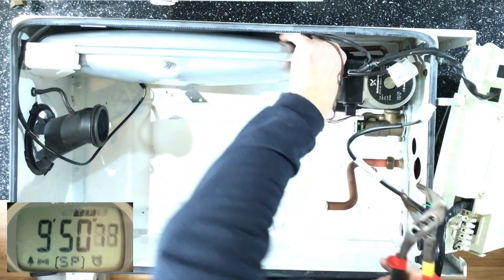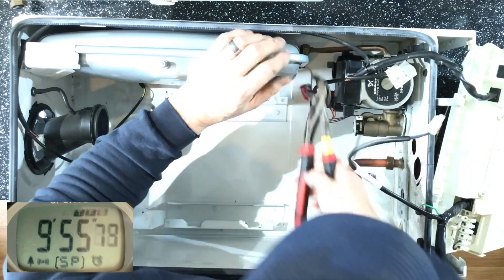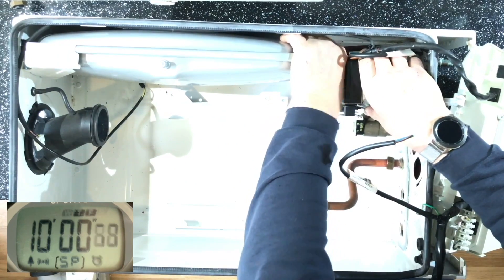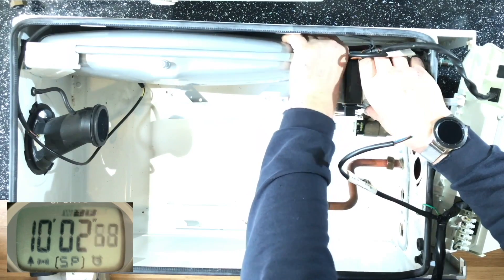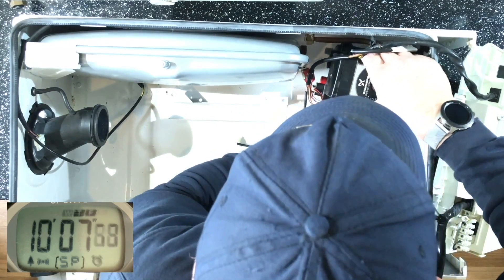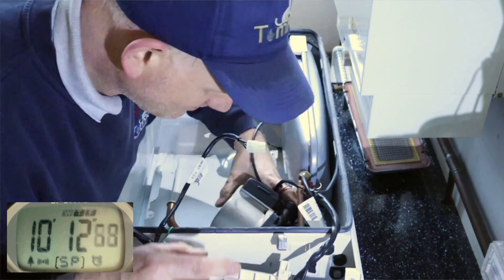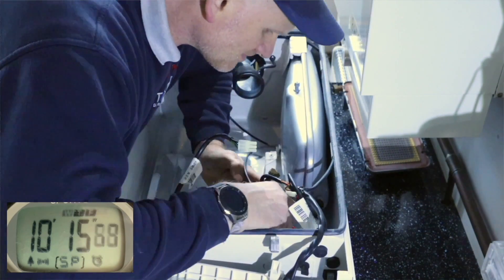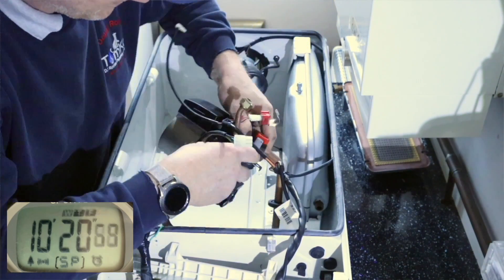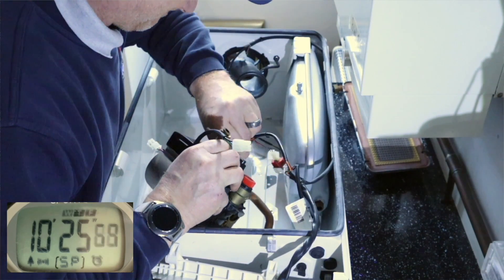So I'm just undoing this copper pipe going to the expansion vessel. Now one thing to look out when you're changing the expansion vessels on these boilers, the actual connection off the pump is different on the newer versions than it is on the older ones. So as you can see on this one, it's still a copper pipe going up to feed the expansion vessel. But on this one, it comes off the side of the pump, whereas the newer ones come off the back of the pump, so you've just got to watch out that you make sure you get the right expansion vessel.